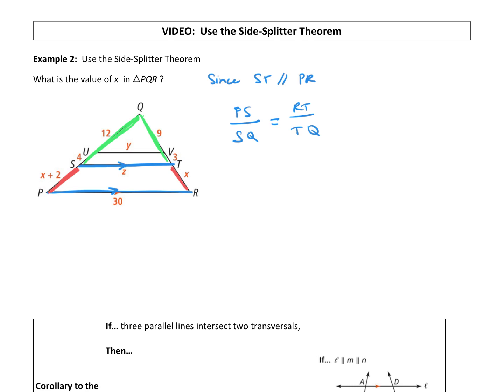So let's just plug in the values that we know. So PS, from P to S is x plus 2. So we're just going to say x plus 2 over SQ. So from S to Q is this whole thing right here. It's the 4 plus the 12. So that's a total of 16 equals. Now on the other side, we have RT, which is just an x over TQ. So from T to Q, again, we're going to add those two segments together. And we can see that TQ is 12 units long.